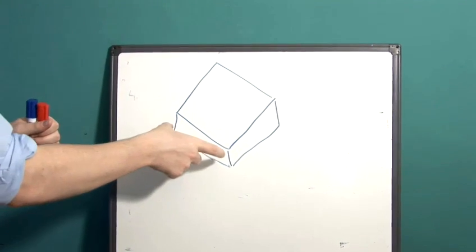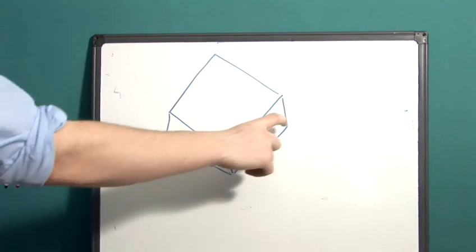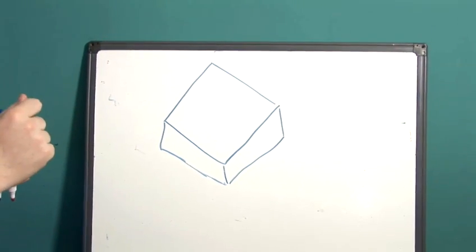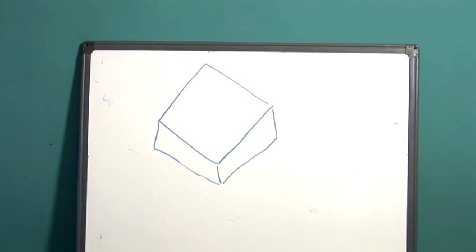So we know that if we can find the area of this face, this face and this face, if we add those together and multiply by 2 that will give us our total surface area.